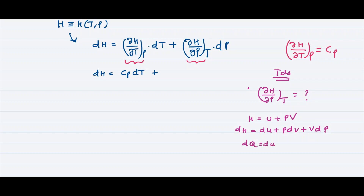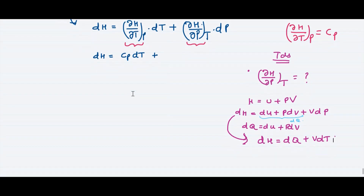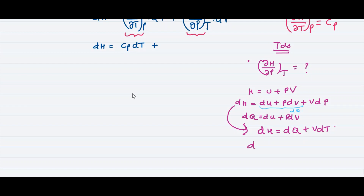From the first law of thermodynamics, dQ equals dU plus P dV. Substituting dQ here, we reach dH equal to dQ plus V dP. From the second law of thermodynamics, dQ equals T dS, where S is entropy. So this formula becomes dH equal to T dS plus V dP.